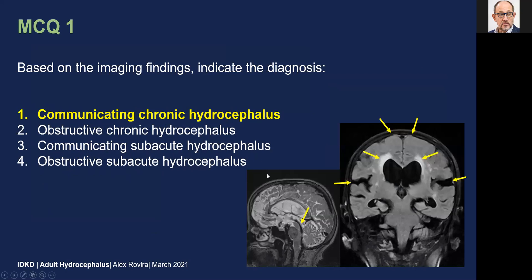The radiological diagnosis, considering the clinical findings, was a communicating chronic hydrocephalus, as all the imaging features indicate a chronic condition. The extensive white matter changes cannot be interpreted as transependymal edema but as chronic white matter changes. Moreover, the disproportionate enlargement of the ventricular system and sylvian fissures compared to the narrowing of the upper convexity CSF spaces are also features that suggest the diagnosis of chronic hydrocephalus.